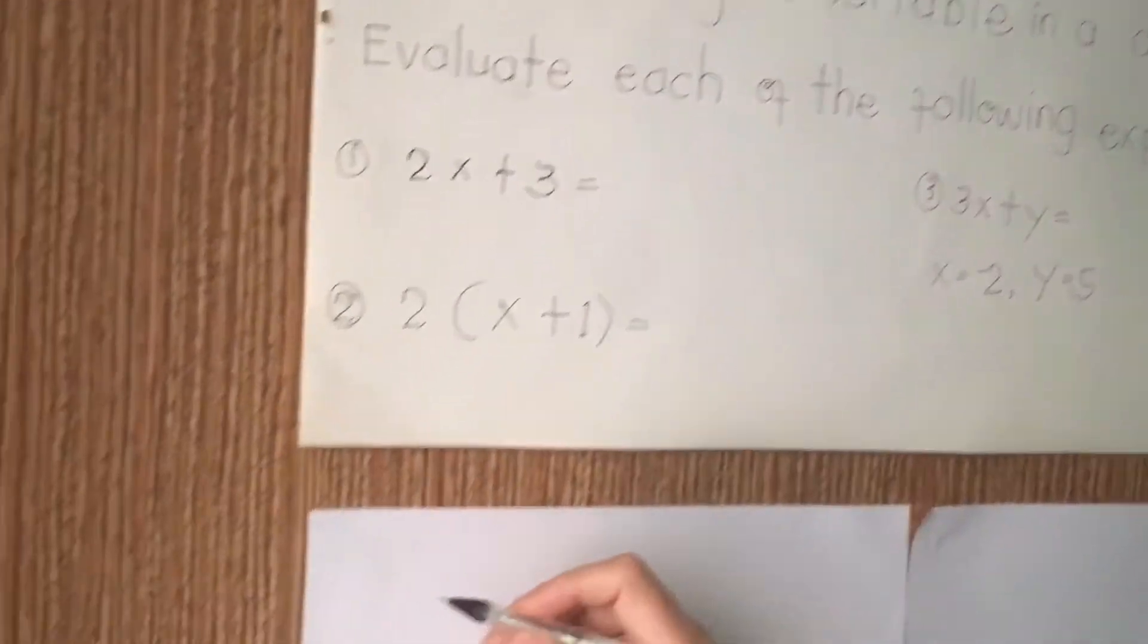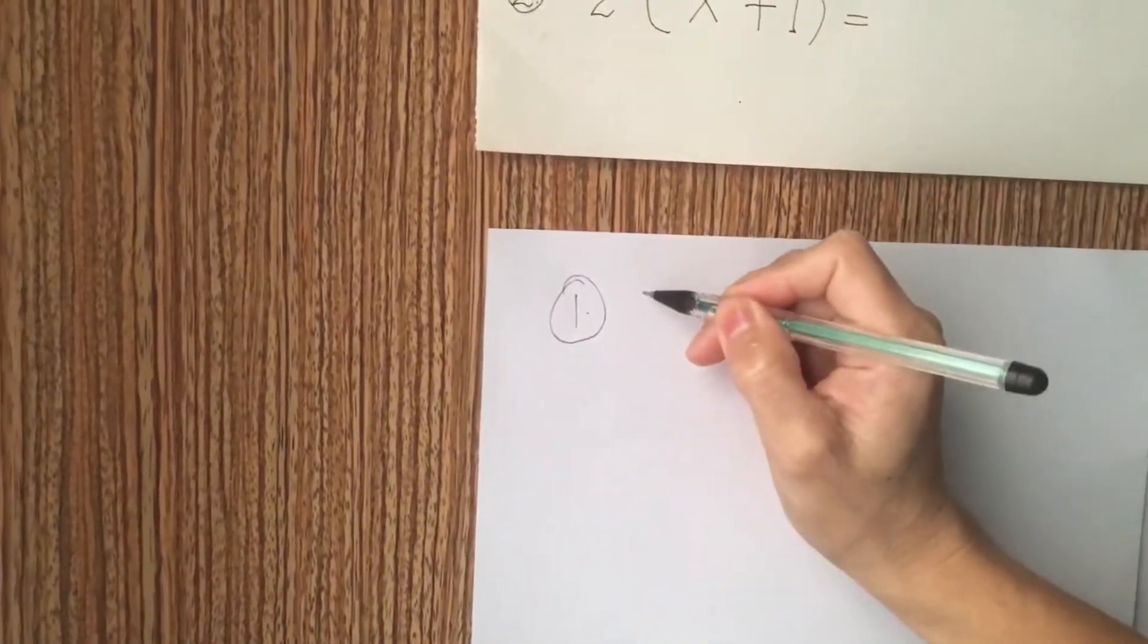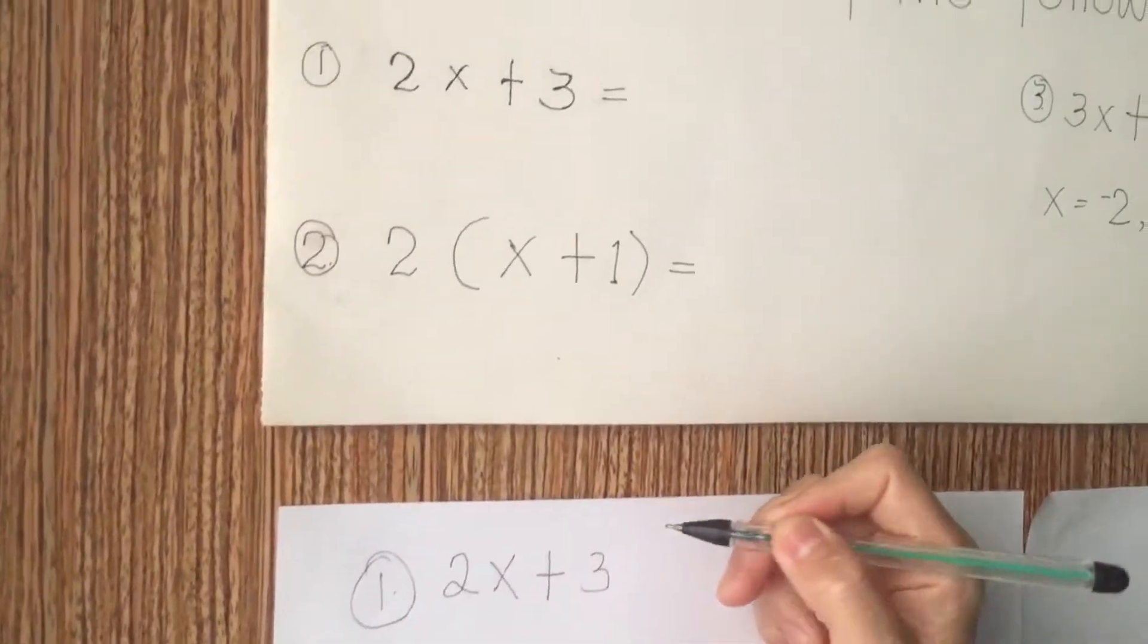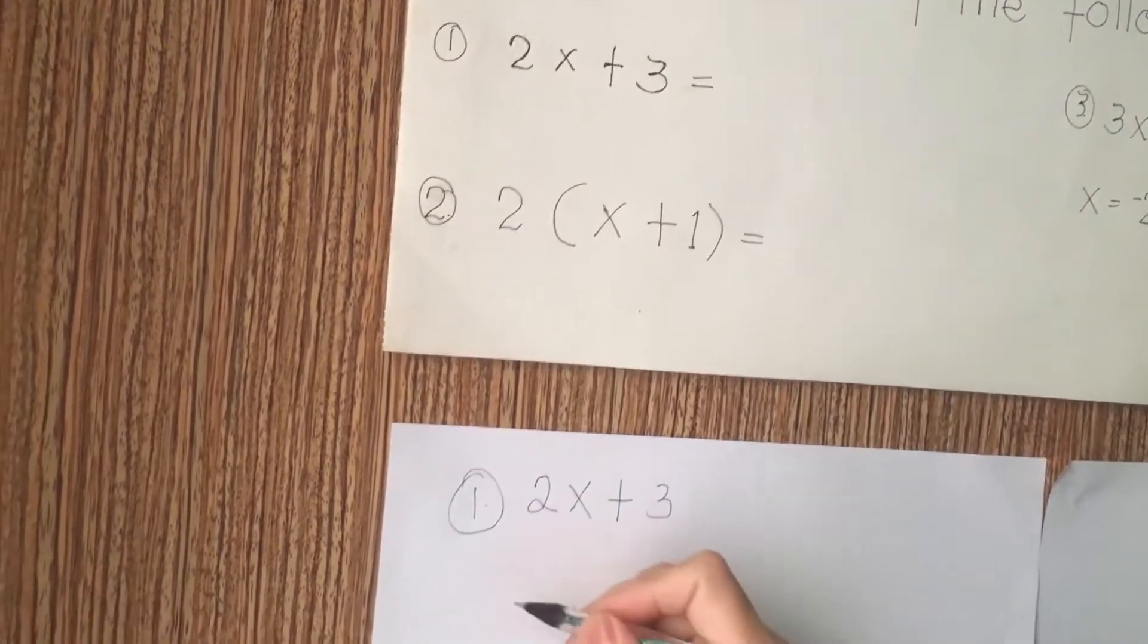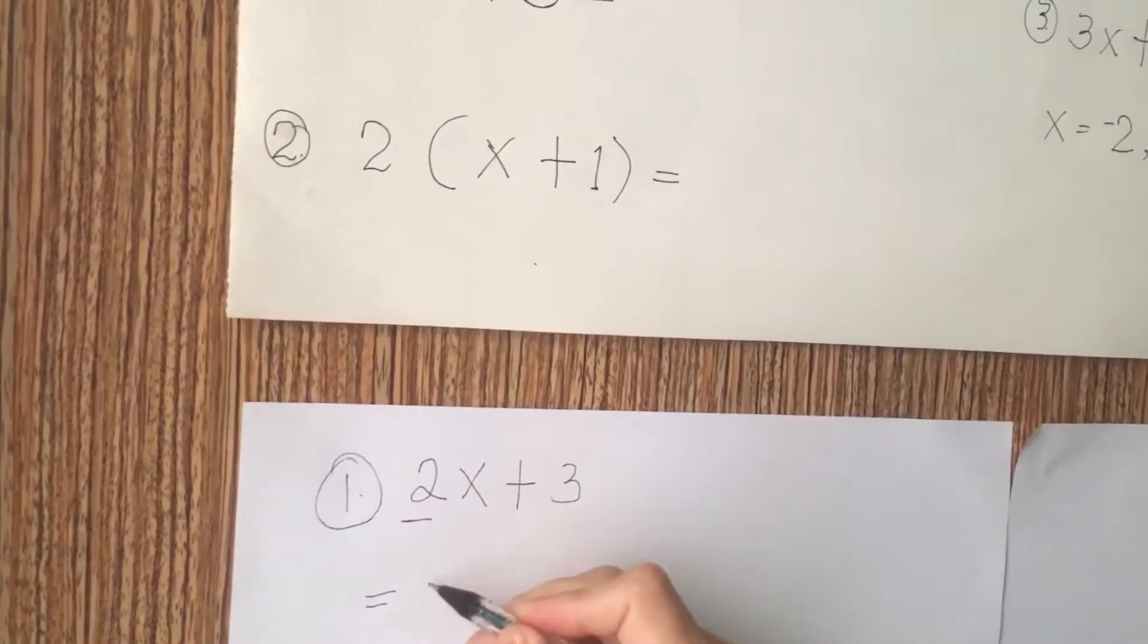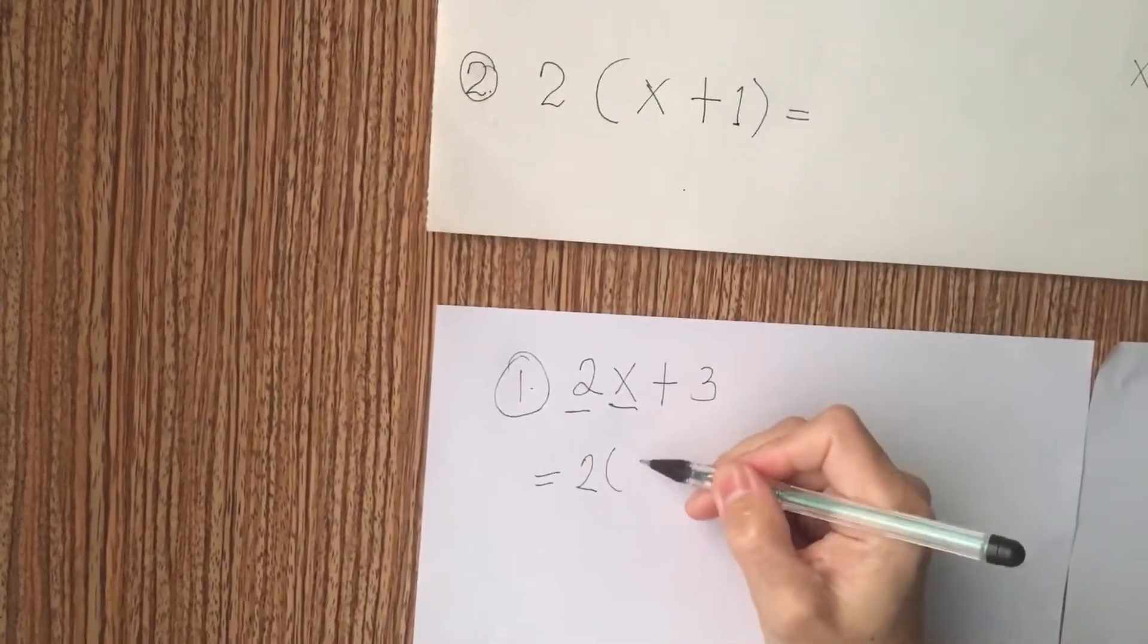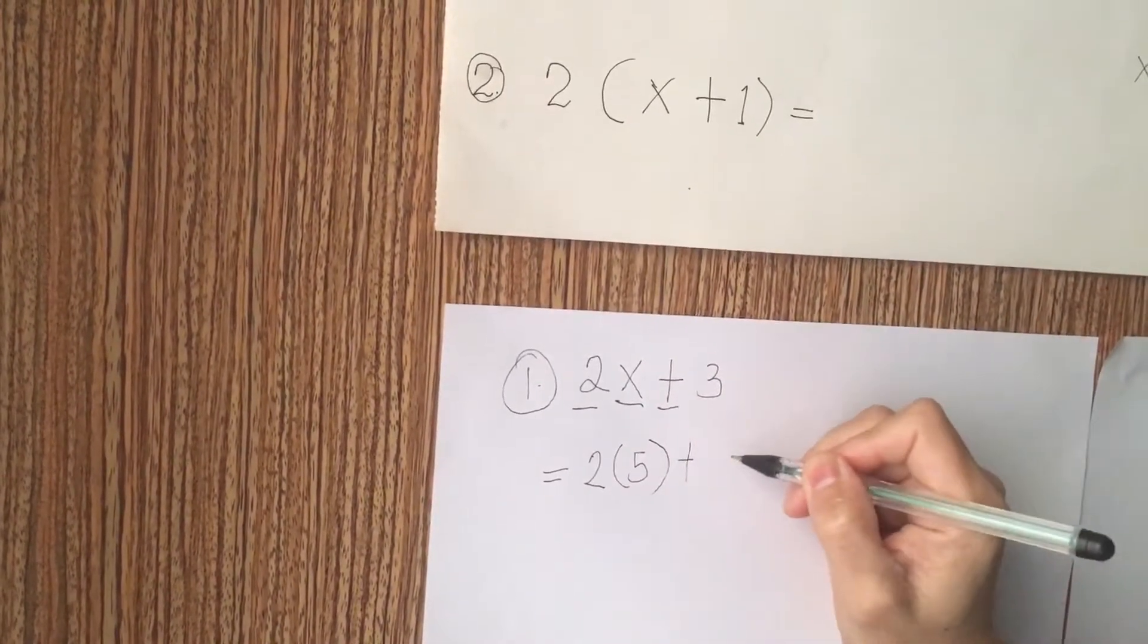I'm going to rewrite first here. Number 1, 2x. I'm going to write, please follow class, plus 3. Why should I rewrite? Because I want to organize it. Next, I put an equal sign. Then I rewrite 2. Give the value of x. We have 5 in close parenthesis, plus sign, and 3.